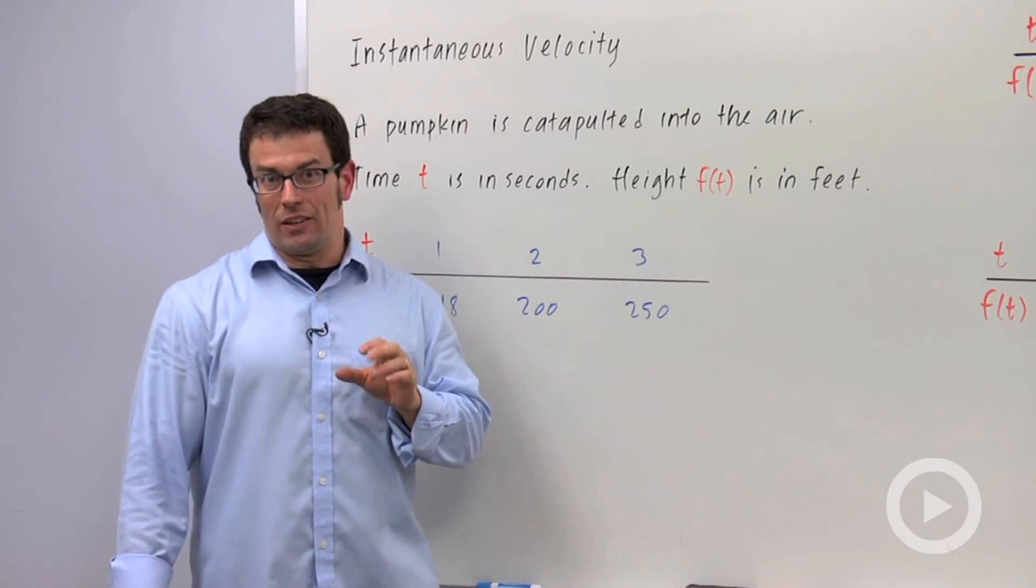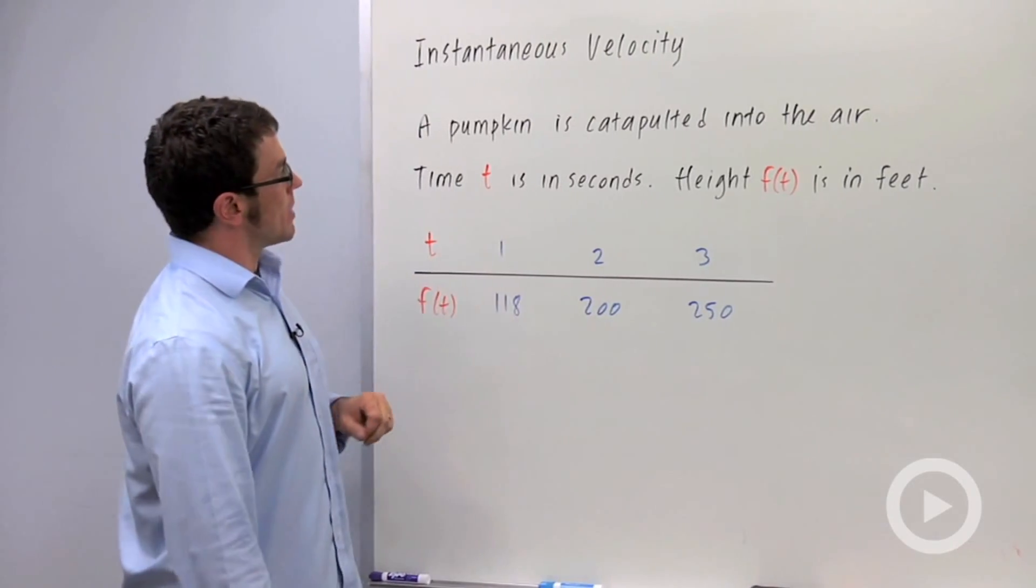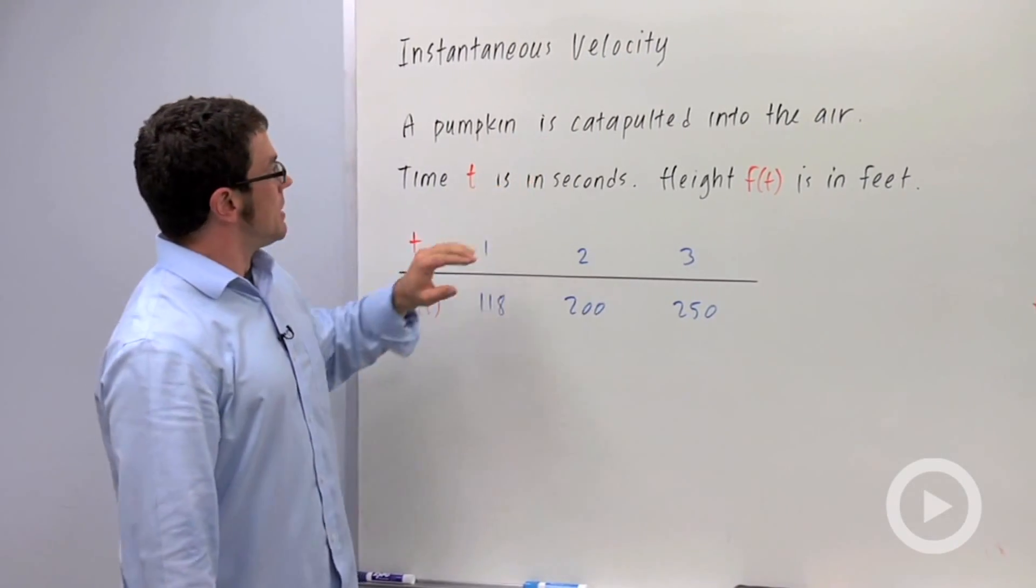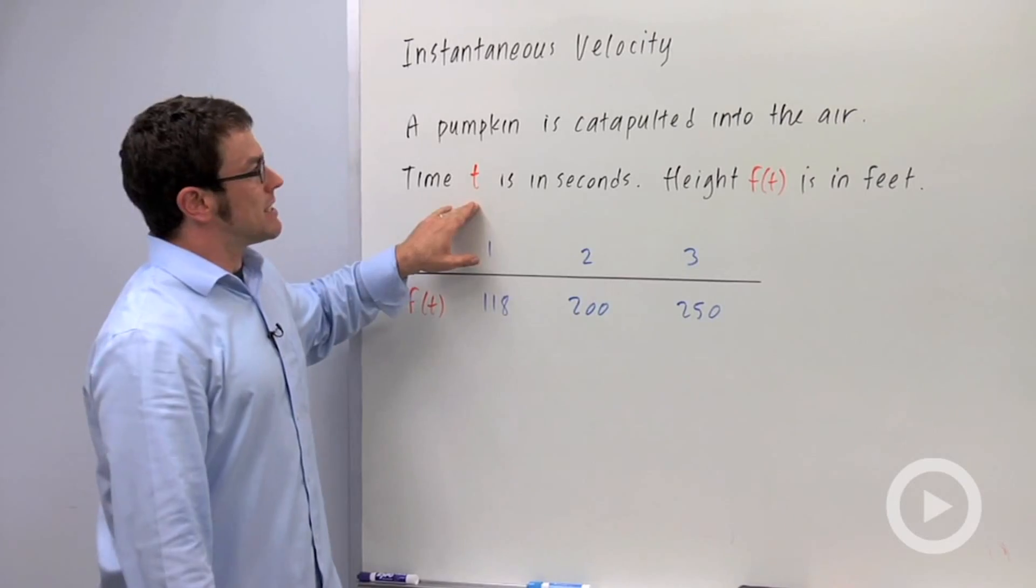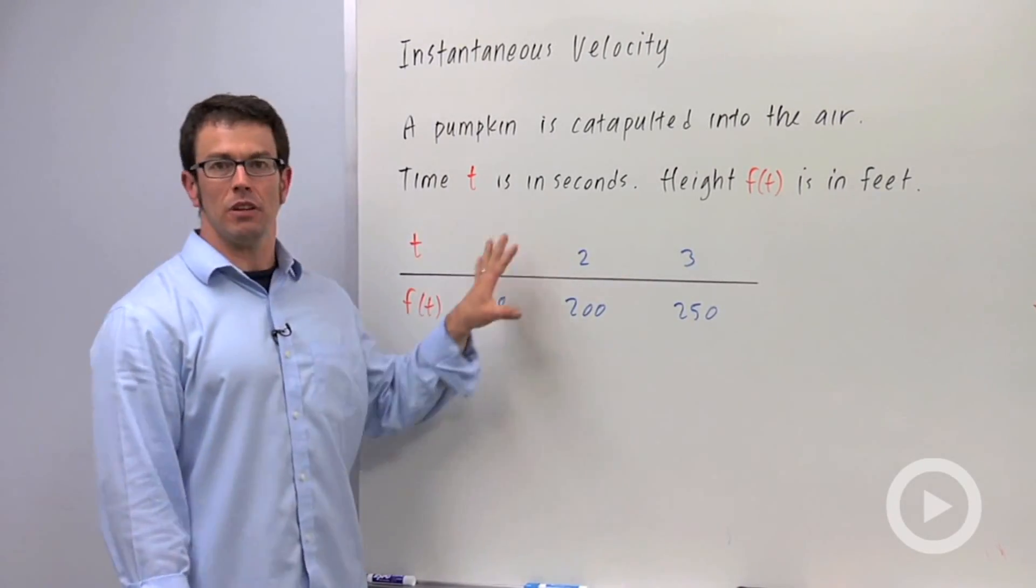Now how do you calculate those things? Well that's what we're going to talk about now. Let's go back to our pumpkin example. A pumpkin is catapulted into the air, time t is in seconds, height is in feet. And here's a small table of values.